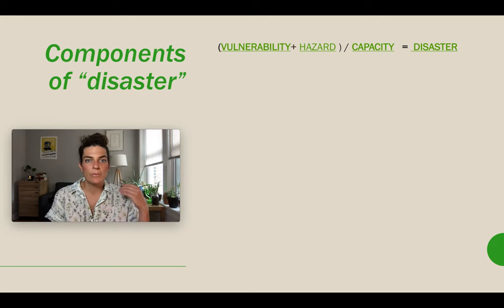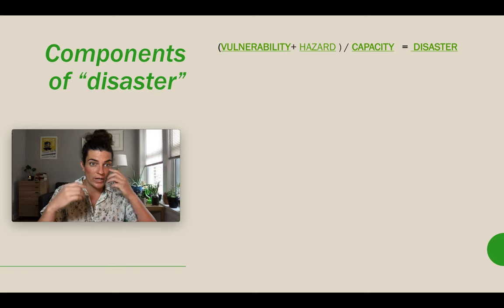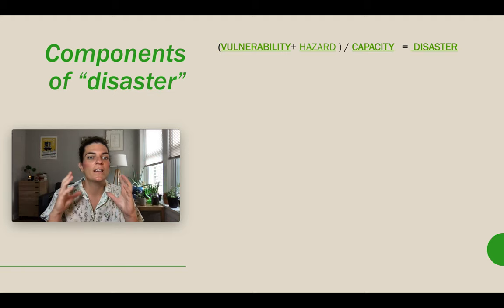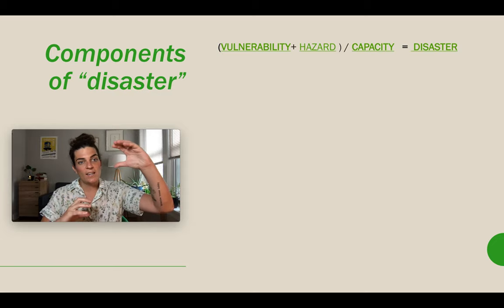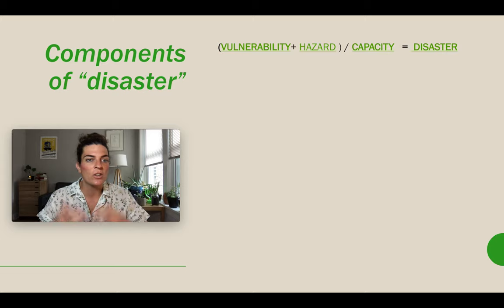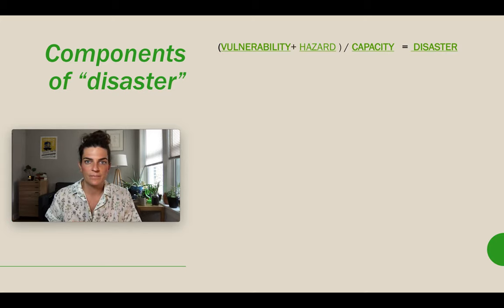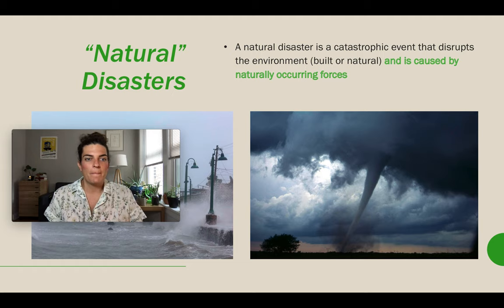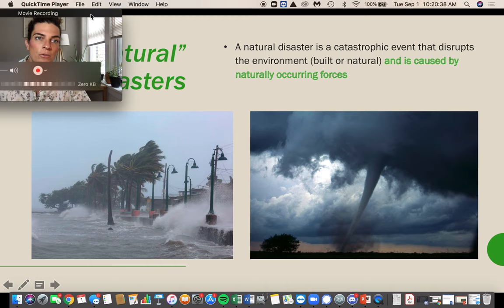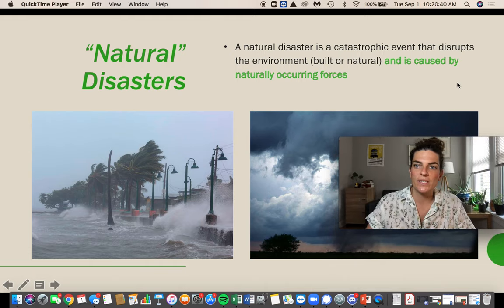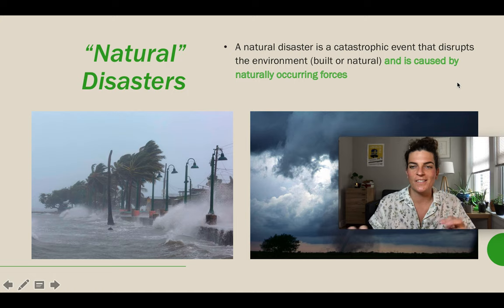To remind you: vulnerability plus hazard — if those numbers are big, then the numerator is going to be large. And capacity — if our capacity to respond is small, then the denominator is going to be small. That fraction is going to be large, and the larger it is, the worse the disaster. So let's talk about natural disasters versus environmental disasters. I named this course Environmental Disasters for a reason, and you'll see why in a second.